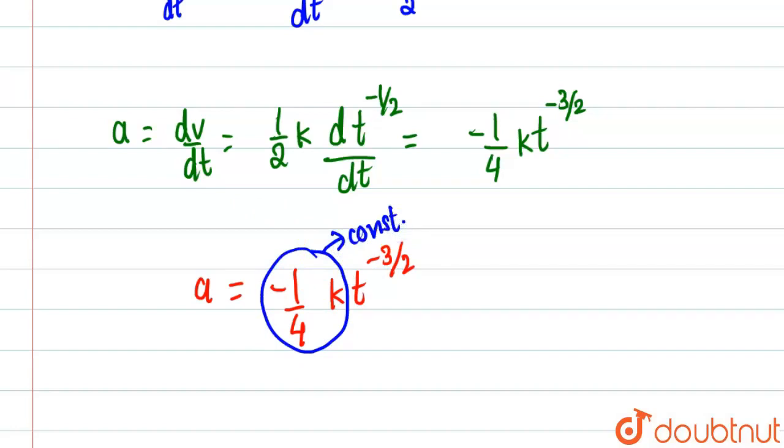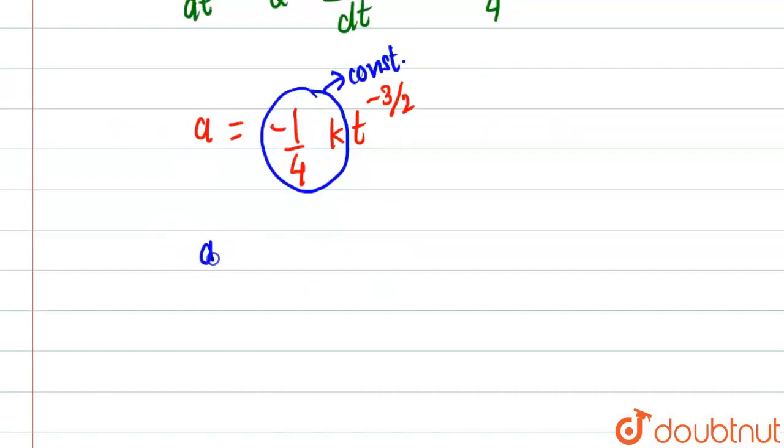So when we bring a proportionality sign and remove the equality, we will find acceleration is directly proportional to t to the power minus 3 by 2. So this is basically our answer. Thank you.